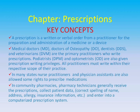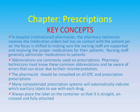In community pharmacies, pharmacy technicians generally receive the prescriptions, collect patient data — correct spelling of name, address, allergy, insurance information, etc. — and enter into a computerized prescription system. In hospital or institutional pharmacies, the pharmacy technician receives the medication orders but has no contact with the patient per se. The focus is shifted to making sure the nursing staff are supported and receiving the proper medications for their patients. Nursing staff generally administer medications to patients. Abbreviations are commonly used on prescriptions, and pharmacy technicians must know these common abbreviations and be aware of errors that can occur due to their misinterpretation.